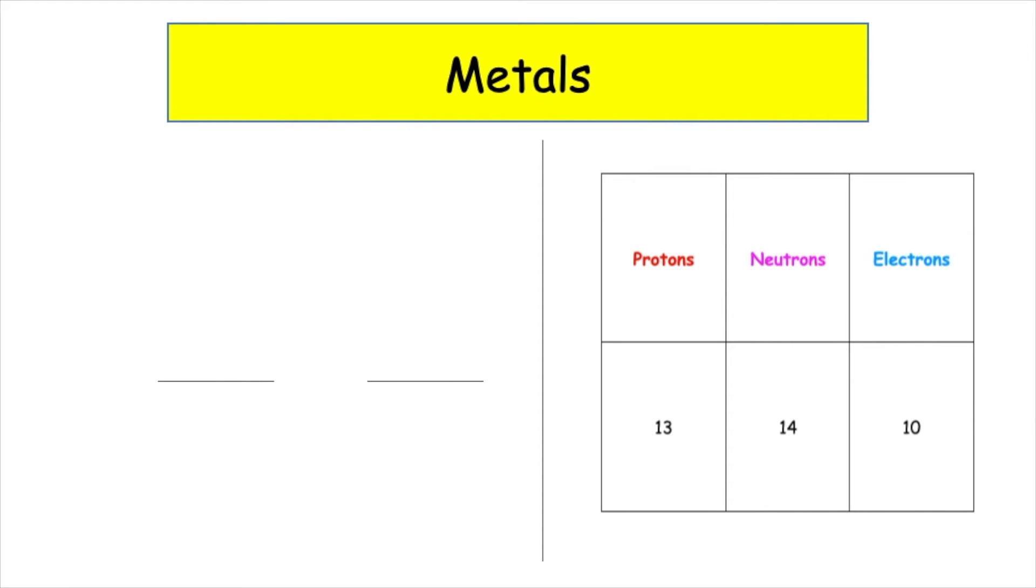In this example, we're given 13 protons, which means the atomic number of the element is 13. When I look that up, it's aluminium, which has the chemical symbol Al. We're given 14 neutrons; 14 plus 13 gives us a mass number of 27. We're given 10 electrons, so if I do 13 plus negative 10, that gives us a 3 plus charge, which means this is an Al3+ ion.